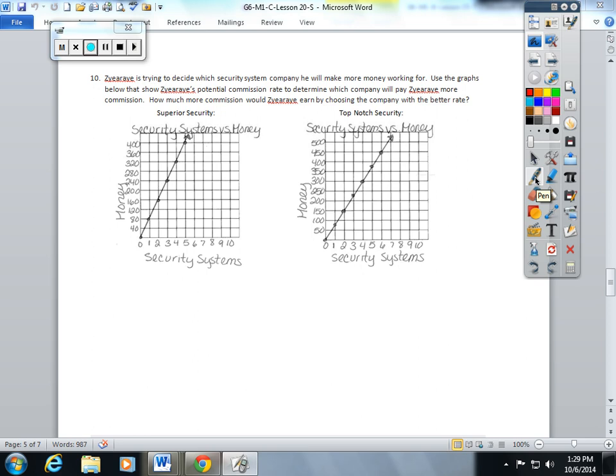So they give you two graphs to do this. I hope that you do the unit rate for each one. For every one security system that he makes at Superior Security, he makes $80.